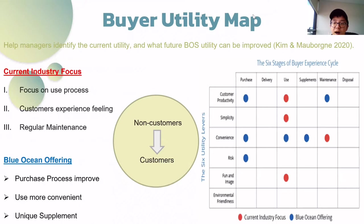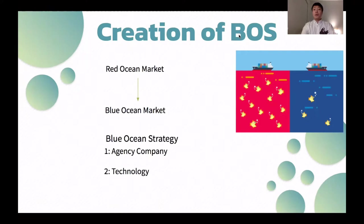Hello everyone, this is Jiaqi. Today I'm going to talk about the creation of Blue Ocean Strategy and the three tiers of non-customers. We found ACN is a non-profit organization and it is in the red ocean market. Therefore, ACN needs to use Blue Ocean Strategy to open a new, untested market to earn profits.